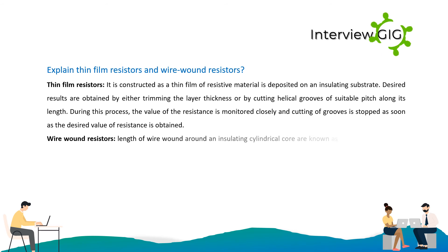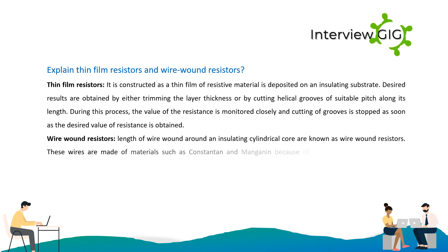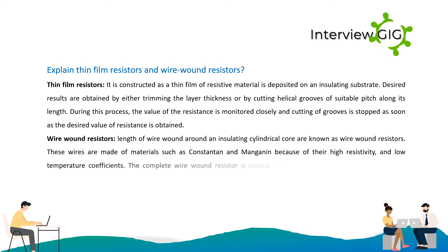Wire wound resistors: a length of wire wound around an insulating cylindrical core. These wires are made of materials such as constantan and manganin because of their high resistivity and low temperature coefficients. The complete wire wound resistor is coated with an insulating material such as baked enamel.